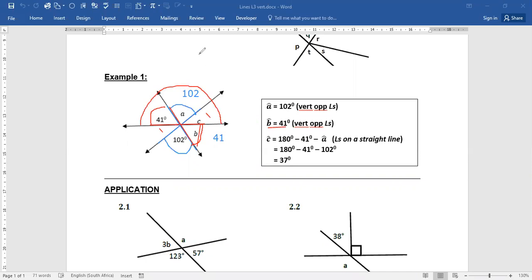So angle C can be worked out with angles on the straight line. Or we could have worked with angles on this side: 102, 41, and work at angle C. And look at the example here. We said 180 degrees minus 41. So 180 minus 41 minus angle A, subtracting angle A to get angle C. So there's 180 minus the 41 minus 102 and gives you angle C, which is 37 degrees angles of the straight line. So we now have used two reasons: one is vertically opposite angles and angles on the straight line.